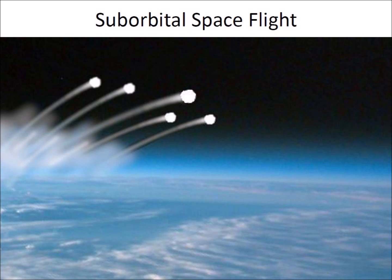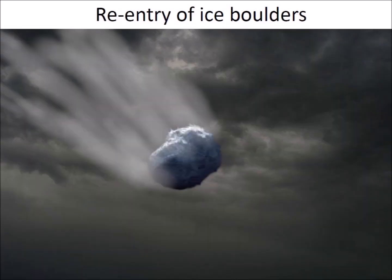Approximately 1.5 trillion cubic meters of ice were ejected in suborbital space flights by the extraterrestrial impact. Depending on their size, the ice boulders had kinetic energies of 13 kilotons to 3 megatons of TNT. Chunks of ice as big as a baseball stadium plunged to earth at 11 times the speed of sound.